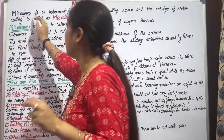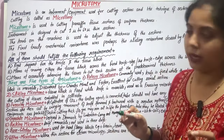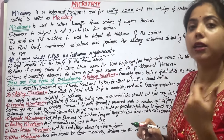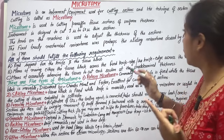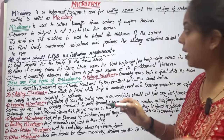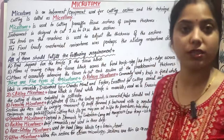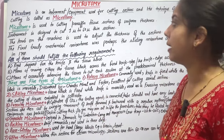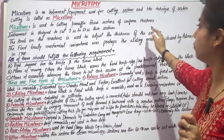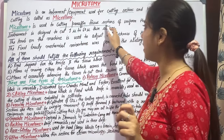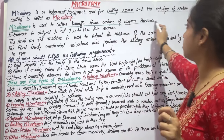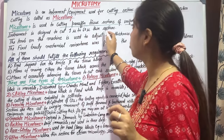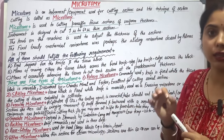The Microtome is an instrument used for cutting paraffin tissue sections of uniform thickness. The microtome is designed to cut sections from 1 micron to 60 microns in thickness. The thickness is adjustable to cut sections as required.